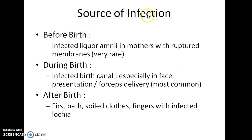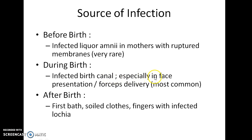Coming to the source of infection of Ophthalmia Neonatorum, an infant can acquire Ophthalmia Neonatorum before birth through infected liquor amnii in mothers with ruptured membranes. This is a very rare mode of transmission. An infant can acquire Ophthalmia Neonatorum during birth through infected birth canal, especially in cases of face presentation and forceps delivery. This is the most common mode of transmission.